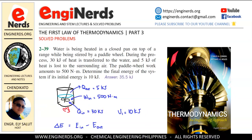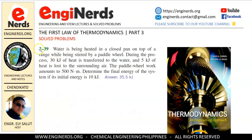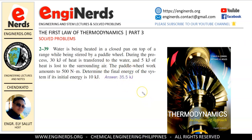So let us now proceed in solving these problems. We begin with problem 2-39 from Thermodynamics and Engineering Approach 8th edition by Cengel. As you can see, we already have an answer here which is 35.5 kJ. What we need is the solution — how did we arrive at this answer of 35.5 kJ.